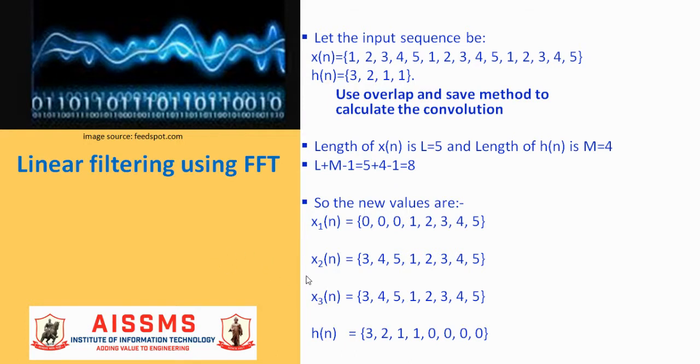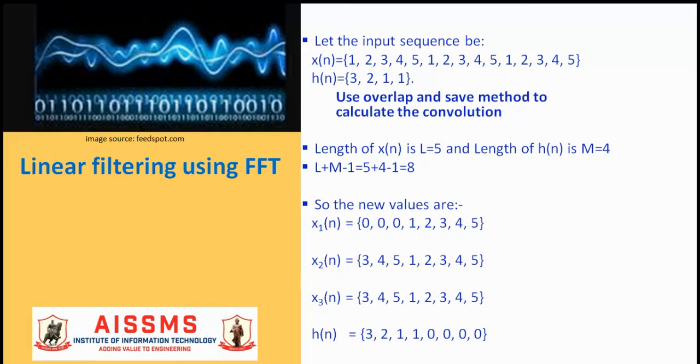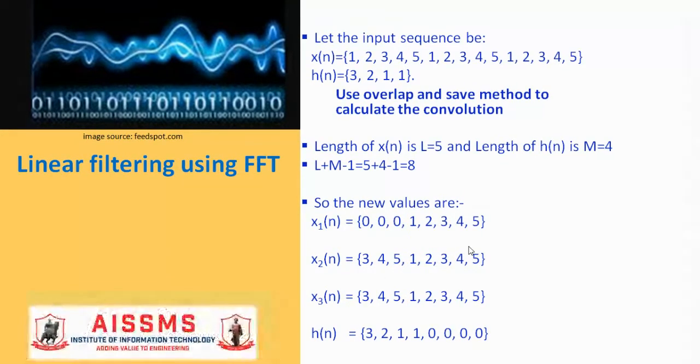So for x2(n) subsequence, we need to append M minus 1, which is 3 samples of the previous subsequence. Similarly for x3(n). But for the first block, there are no previous block, so we append M minus 1, that is 3 zeros at the start. The next step is to append L minus 1 zeros at the end of the impulse response h(n).